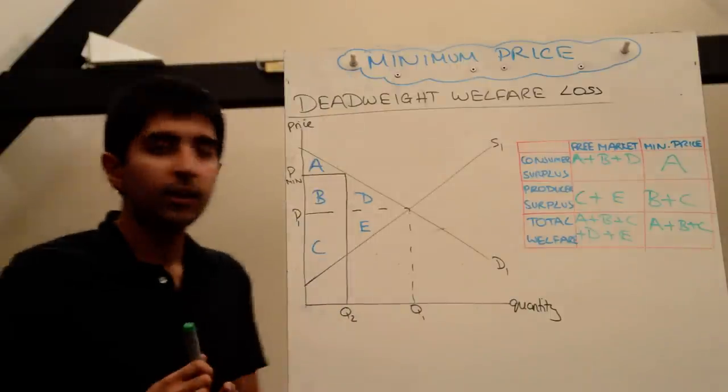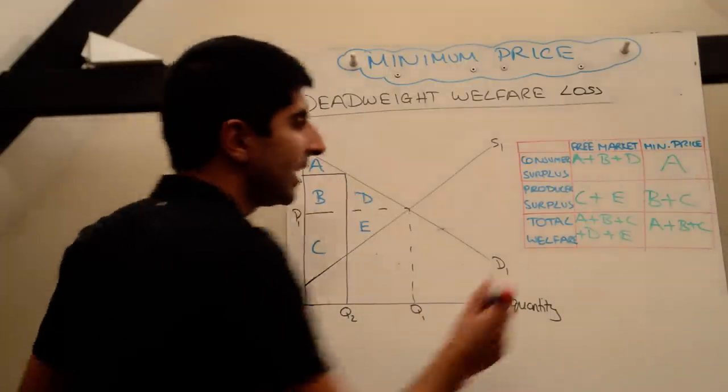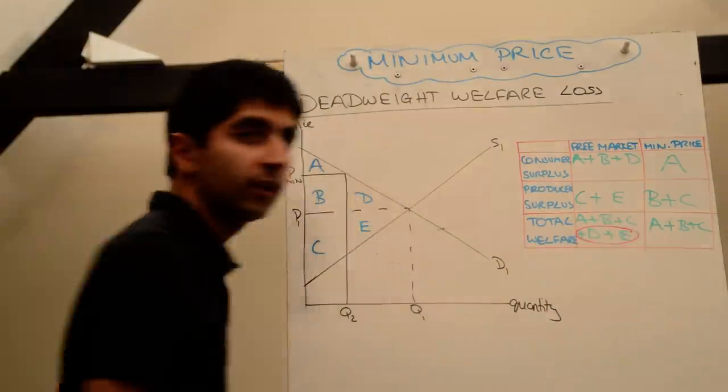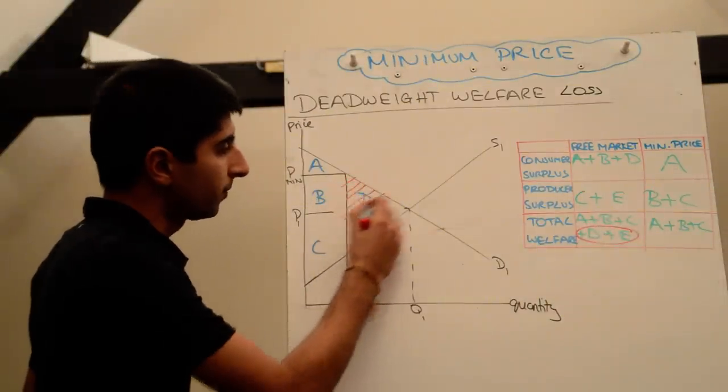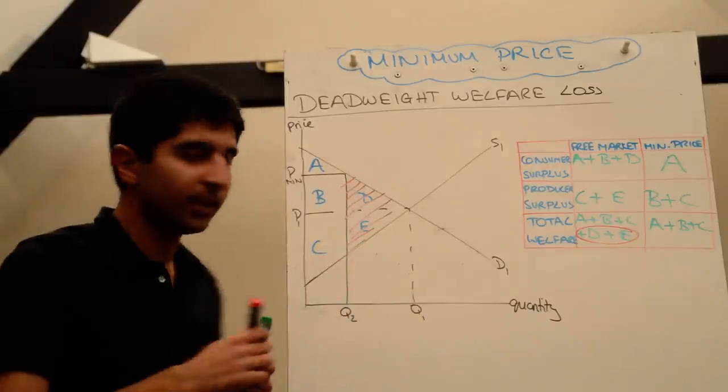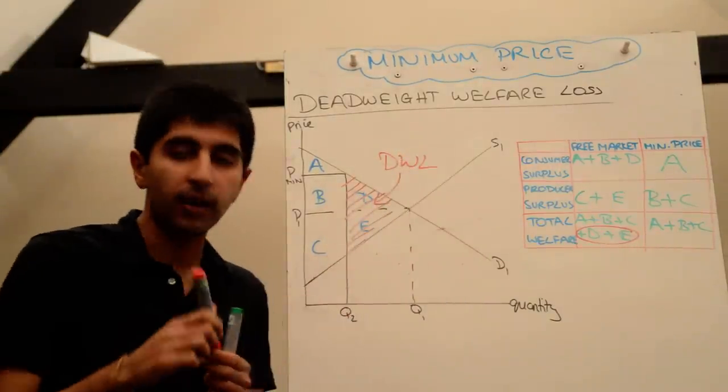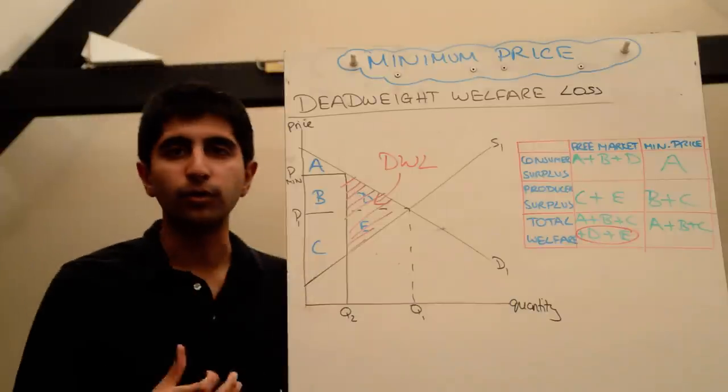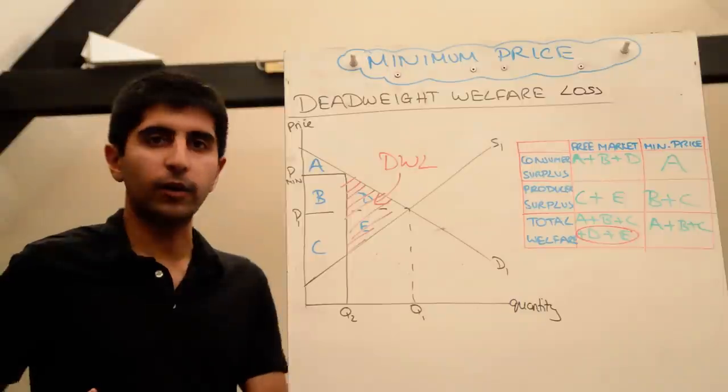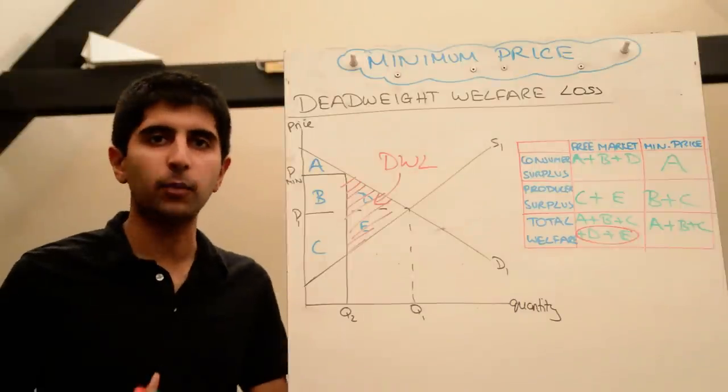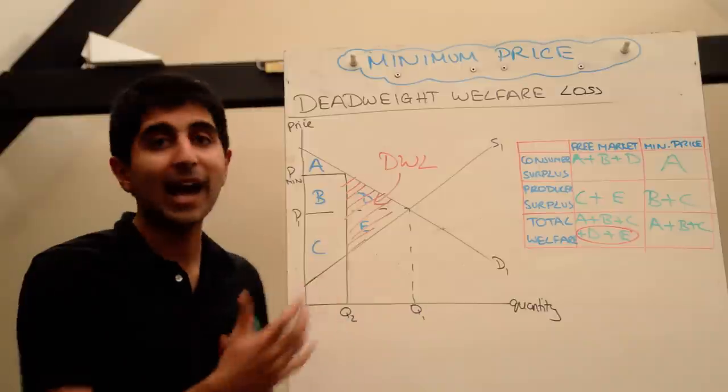So the triangle I shaded in before, which comprises both D and E but basically one big triangle there, is the area of deadweight loss when a minimum price is imposed on a market. So that triangle is always a deadweight loss and if you shade that triangle in and label it deadweight loss and explain why, you will score very highly in an essay when you have to analyze the minimum price.